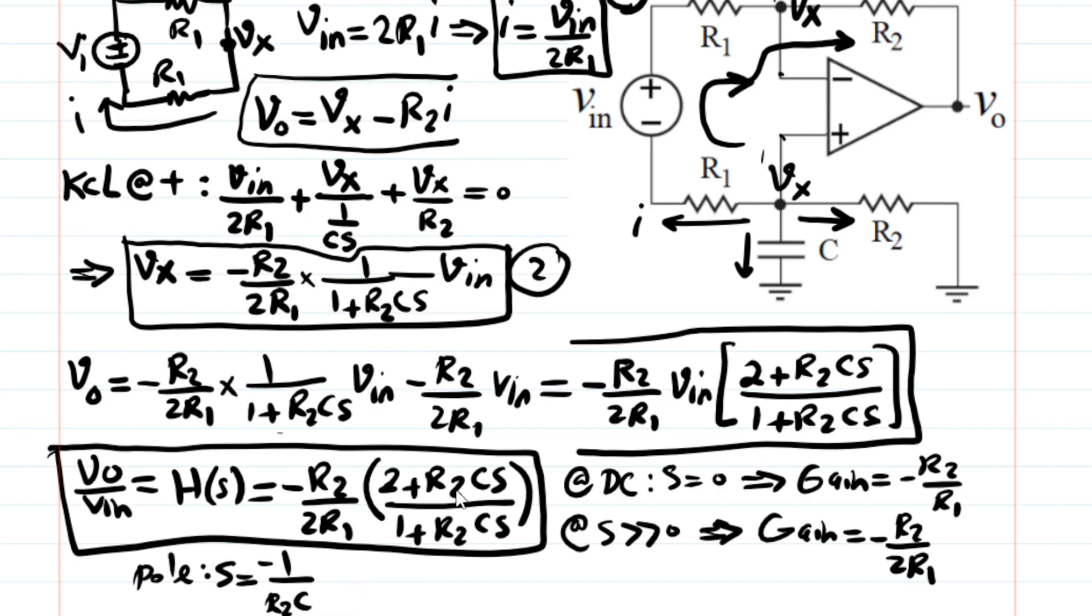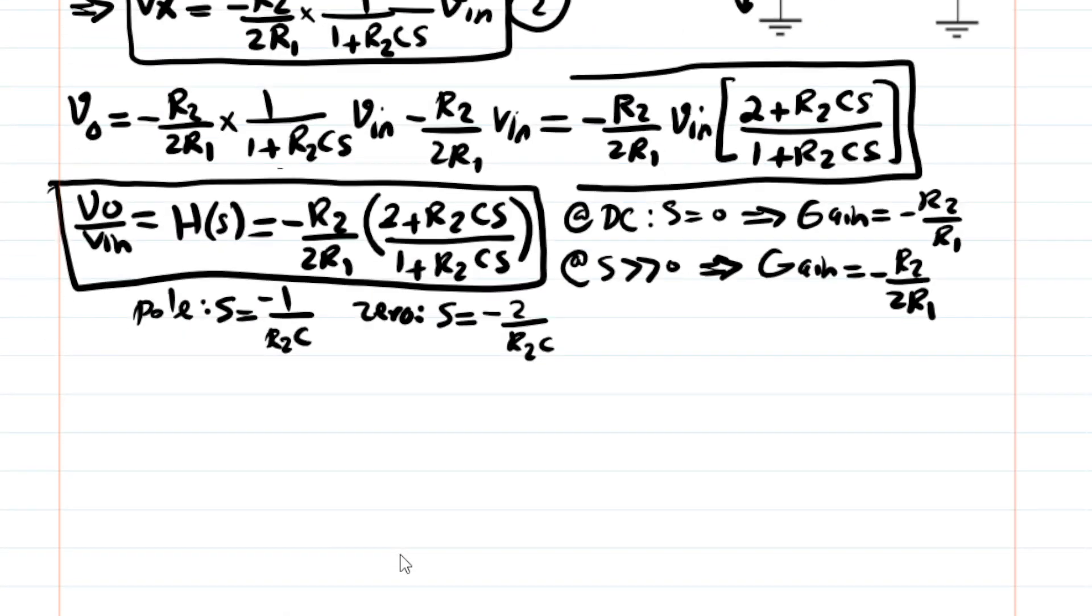And for zero, you have one zero in this system. For zero, when you set the numerator to zero, you get your zero at negative 2 over R2 Cs. So obviously, the position of zero is at twice the frequency of the position of pole. And if you then draw the Bode plot, I mean,